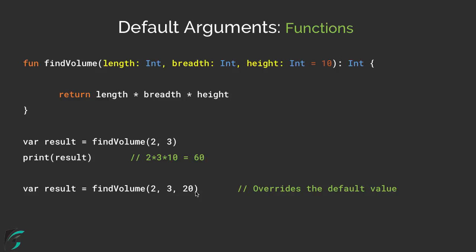If you notice, we are also passing the third parameter this time. So length will become 2, breadth will become 3, and in case of height, the value will be overwritten — this 10 will now become 20. So in the output we are going to get 2 × 3 × 20, which equals 120. By passing a value here, we have simply overridden the default value of 10.